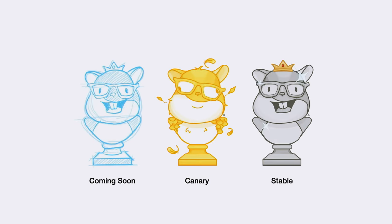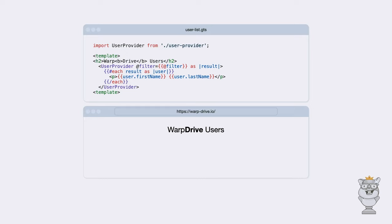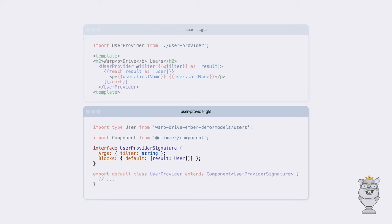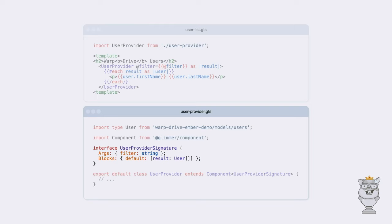During today's talk, when we're showing new features, we're going to show these Tomsters to indicate if the feature is coming soon, available in Canary releases, or available in stable releases. Warp Drive Ember is available as a stable release. These examples will show varying implementations of the same component — the user-provider component, which requests and displays a filtered list of users based on a passed-in filter argument. While the request is running, it shows a spinner. When the request completes, results are yielded to the result block. And if the request errors, it displays the error message. The component signature takes a string filter as an argument and yields the resulting users list to a default block.